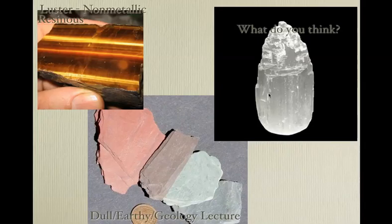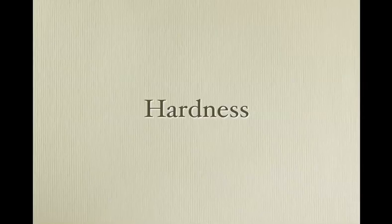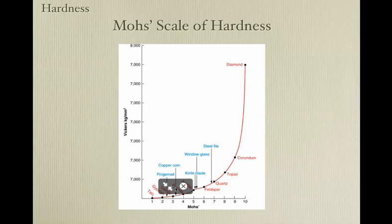What would you call this mineral? Would it be metallic? Probably not. Non-metallic — is it glassy, rosinous, pearly, or dull? You can discuss it. Next: hardness. Hardness is not the smashability of the mineral — it's the mineral's resistance to being scratched.